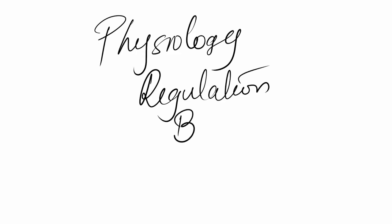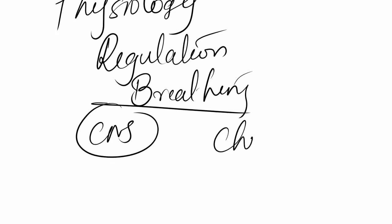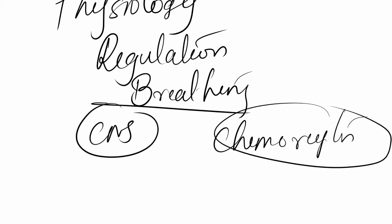The physiology of regulation of breathing is under a lot of control. Mainly you have the CNS and the chemoreceptors. Various other phenomena influence breathing, but they either have to pass through the CNS mechanism or through the chemoreceptor mechanism — and even the chemoreceptors finally go through the CNS mechanism itself.